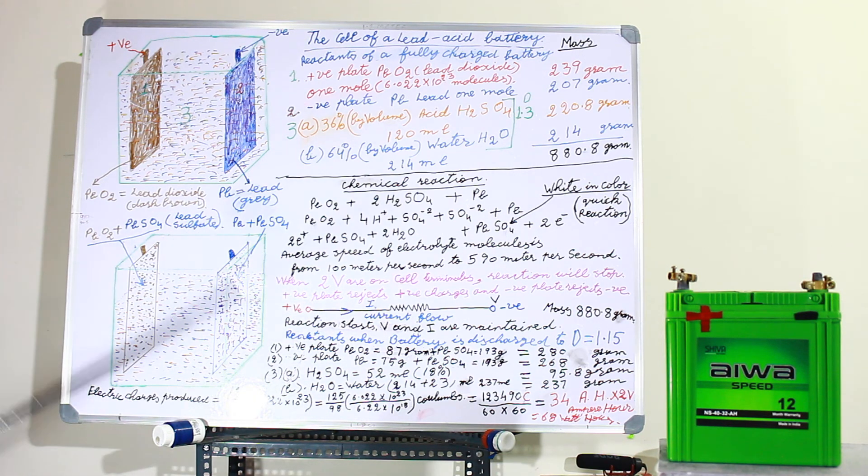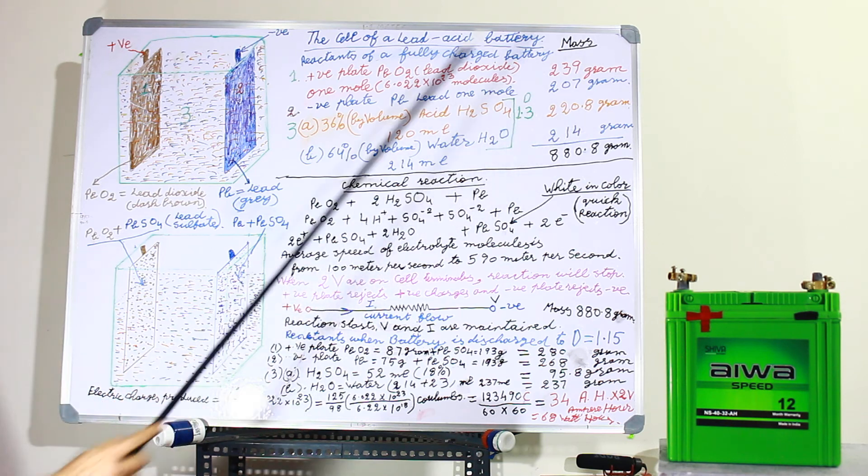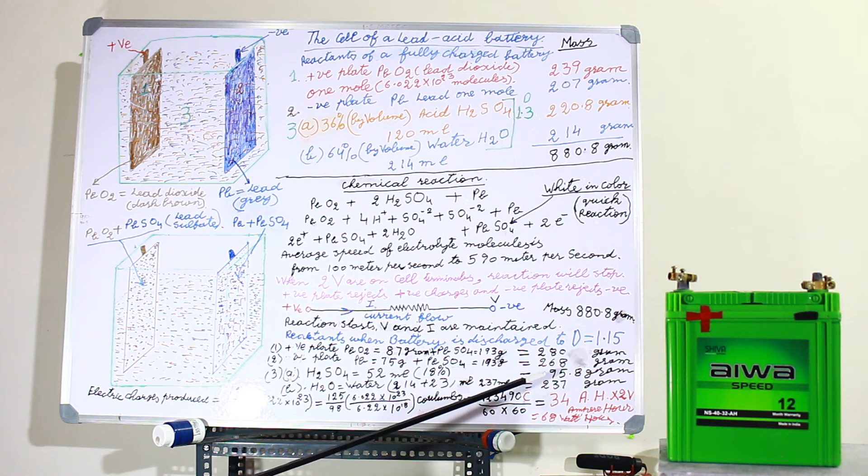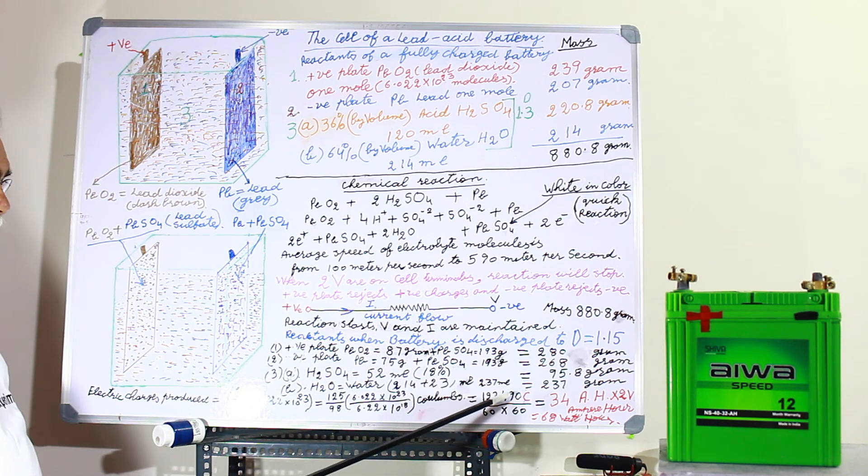Now how much energy we will get from it? Electric charges produced. We have used 220.8 grams of H2SO4 down to 95.8. So we have used 125 grams. And one mole of H2SO4 is 98 grams. So by multiplying with Avogadro number, we get 125 by 98 into this. This will be the charges. If we divide by coulomb charge, we get the coulombs. How many coulombs? We will get 123,490 coulombs.